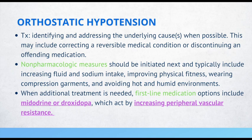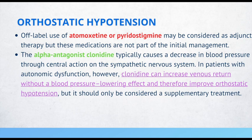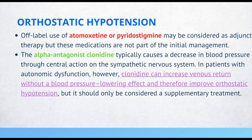When additional treatment is needed, first-line medication options include droxidopa, which acts by increasing peripheral vascular resistance. Off-label use of drugs like atomoxetine may be considered as adjunct therapy but are not part of initial management. The alpha agonist clonidine can increase venous return in patients with autonomic dysfunction and improve orthostatic hypotension, but should only be considered supplementary treatment. Phenylephrine may also be considered as a second-line option.